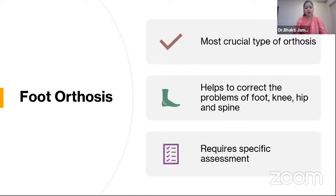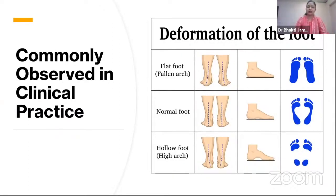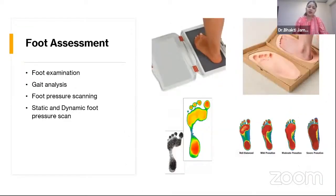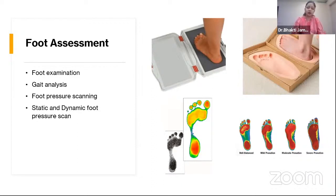Foot orthosis requires a specific type of assessment: foot analysis. In clinical practice we commonly see a flat foot, normal foot, or high arch foot. With flat foot, there can be mild to moderate pronation, or excessive pronation with navicular drop. The same applies to high arch foot. For assessment, the first important step is foot examination, which covers not only the foot but also the knee, hip, ankle, and spine. In this examination we check the position of the heel, the subtalar joint, and the midfoot.